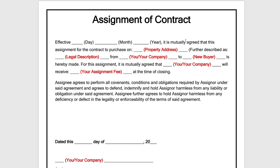It is mutually agreed that this assignment for the contract to purchase on — here you want to enter the property address. So, 123 Main Street, Peachtree City, Georgia, 30269.